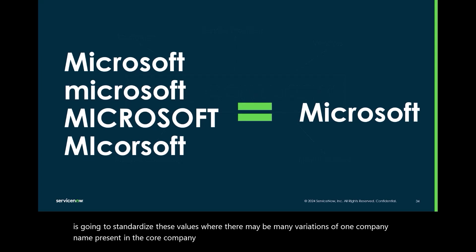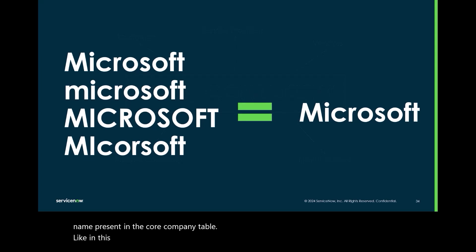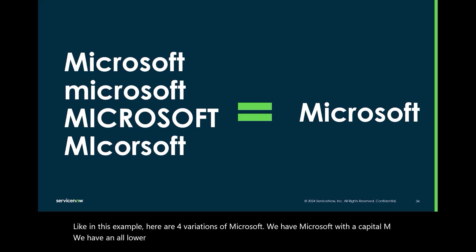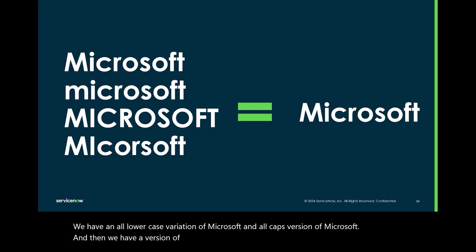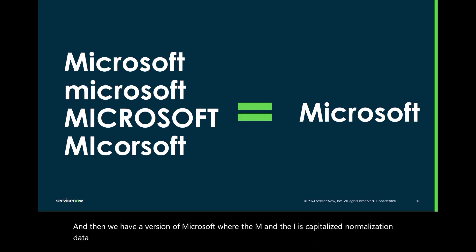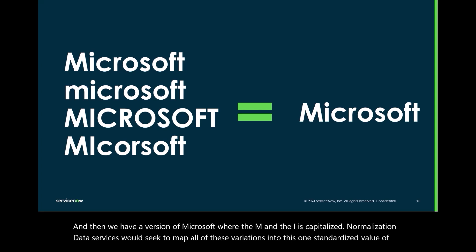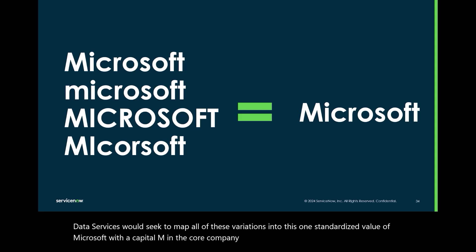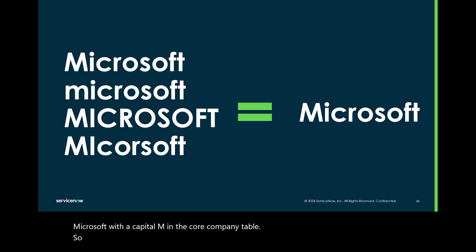For example, here are four variations of Microsoft: we have Microsoft with a capital M, an all-lowercase variation, an all-caps version, and then a version where only the M and the I are capitalized. Normalization Data Services would seek to map all of these variations into one standardized value of Microsoft with a capital M in the Core Company table.